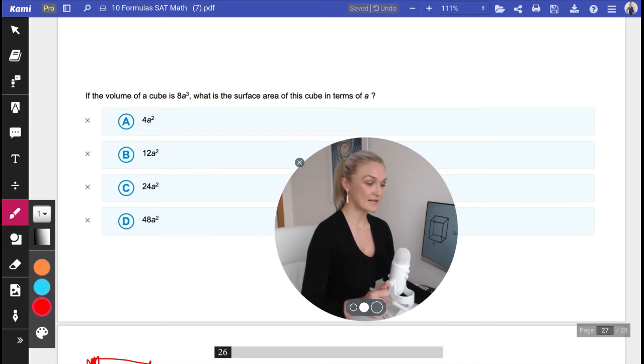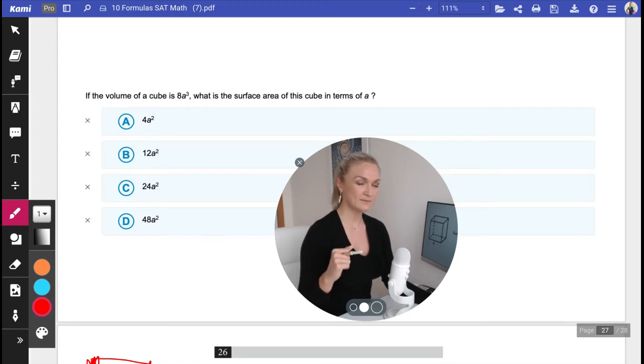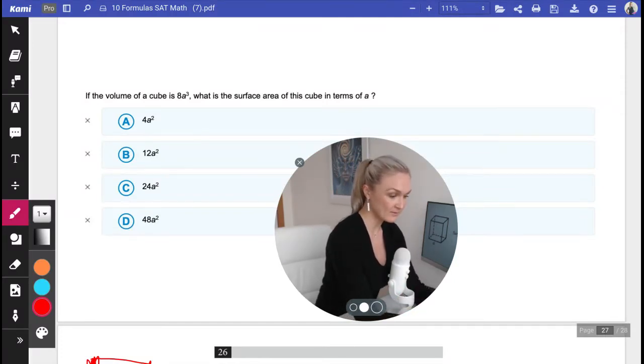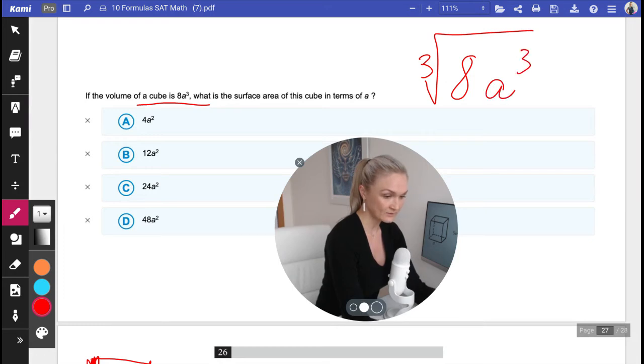So here they're telling us that the volume of a cube is 8A cubed. Can you tell me what the side length is? The side length is 2A. Because in order to go from a volume of a cube to the side, all I need to do is take a third radical of 8A cubed, and I'm going to get 2A.